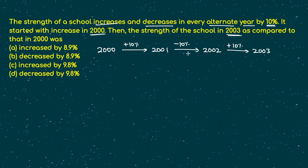Whenever the initial value is not given and the answer is asked in percentage form, it is advised to take the initial value as 100 — this makes calculation very easy. So let the initial value be 100, then we apply 10% increase, 10% decrease, and 10% increase.